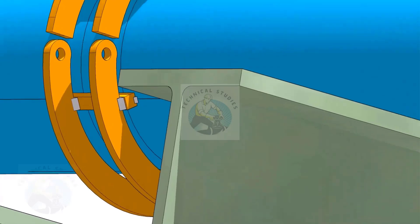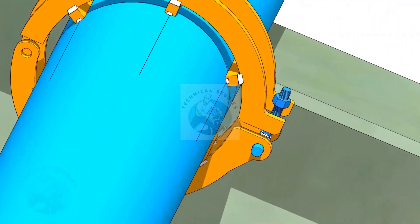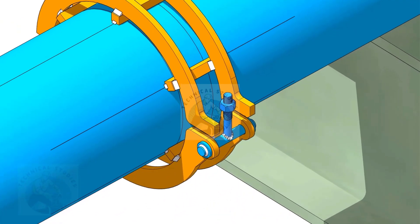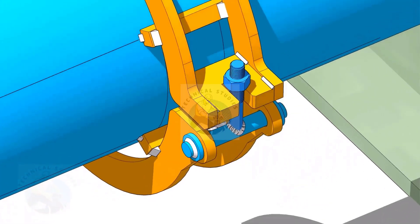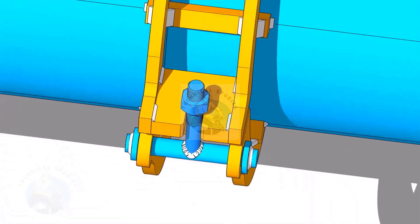First, put the bolt and the hinge plates, and tack weld the hinge plates with the top rings. Tack weld the slotted plate with the top rings as shown.